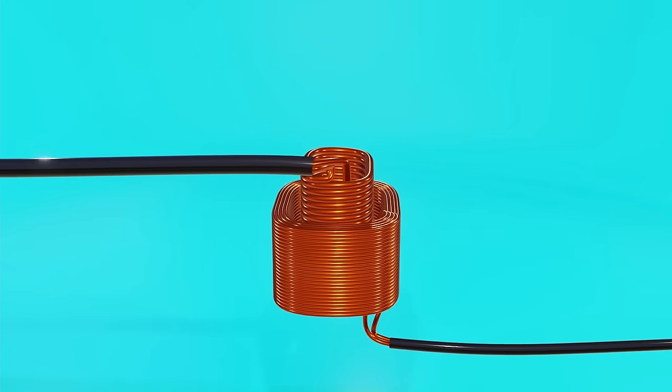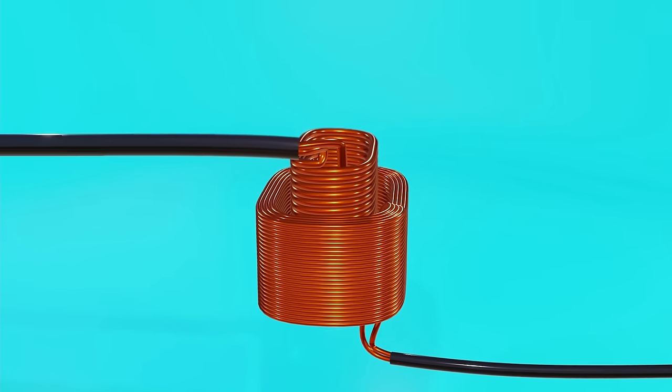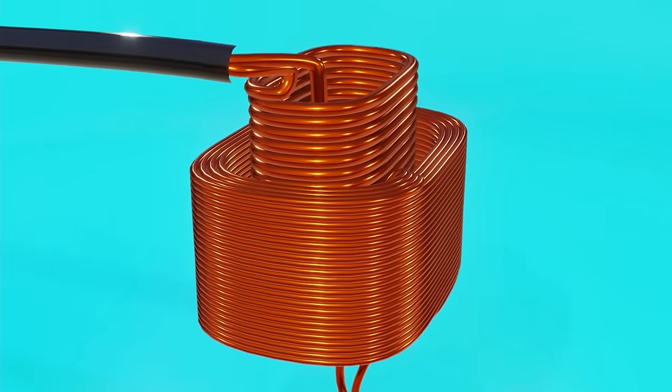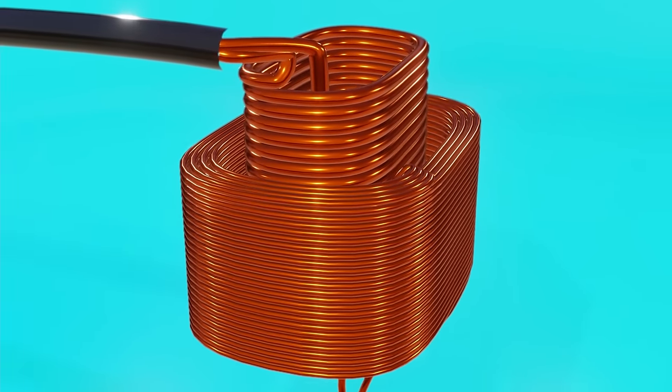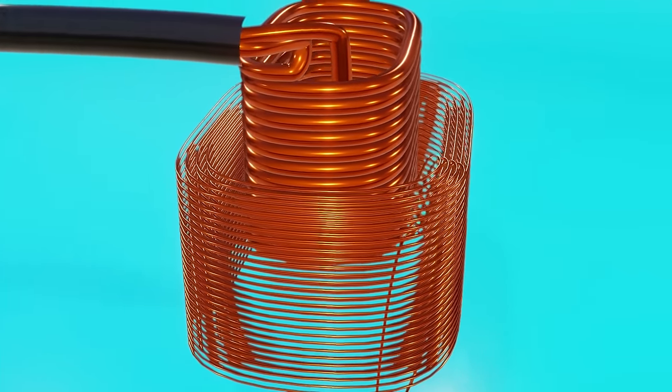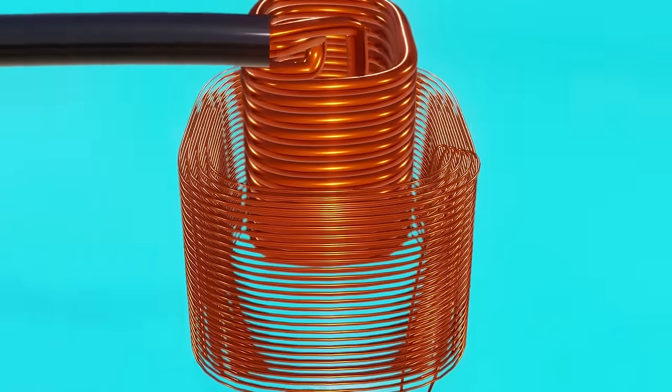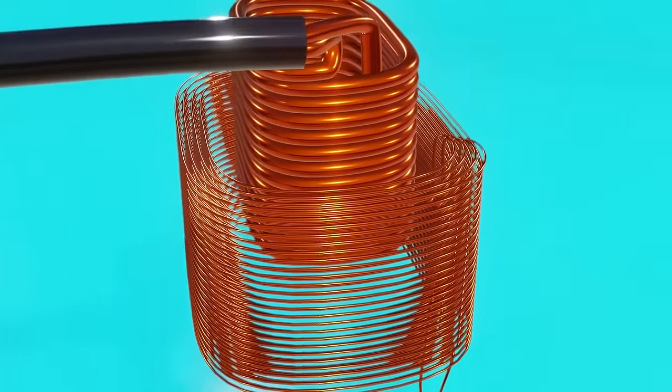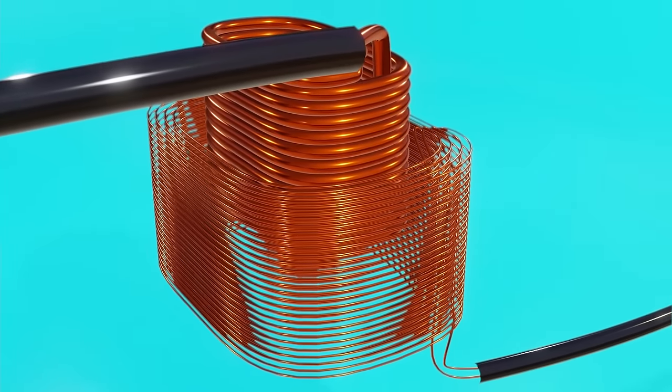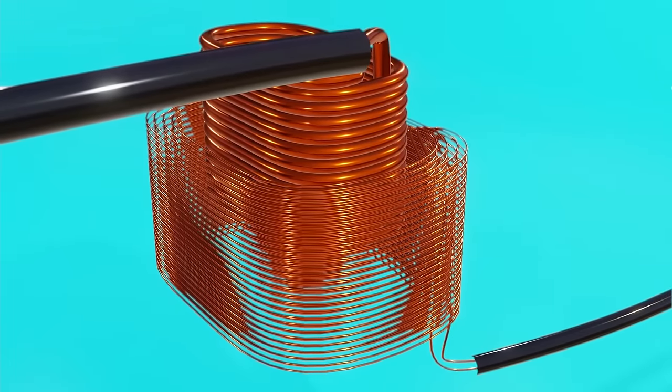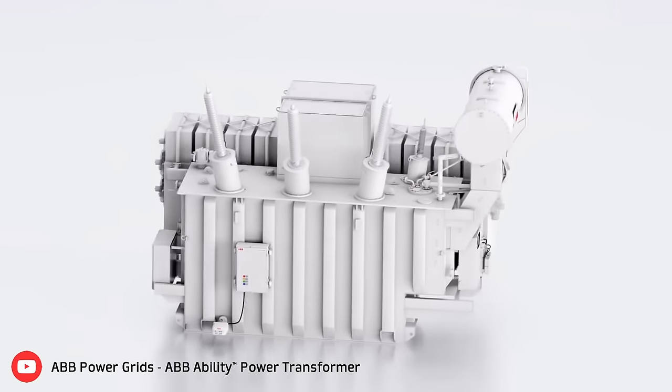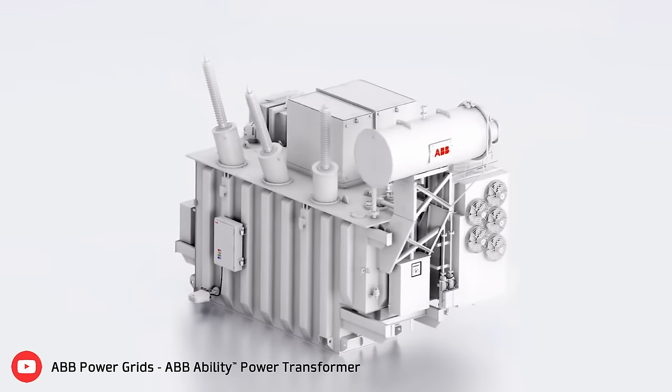Which also directly affects another characteristic of transformers: the diameter of the cables used on each coil. Because by reducing the current we can use thinner cables without worrying about them melting. In theory we could use the same diameter, but remember that less material means less weight, more compact sizes, and obviously less cost of materials for the companies that produce them.